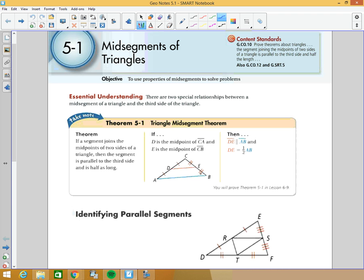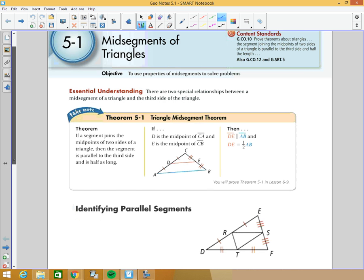Basically, if we take the midpoint of two sides of a triangle and extend a segment, this segment will be parallel to the opposite side and will equal one-half of its length.